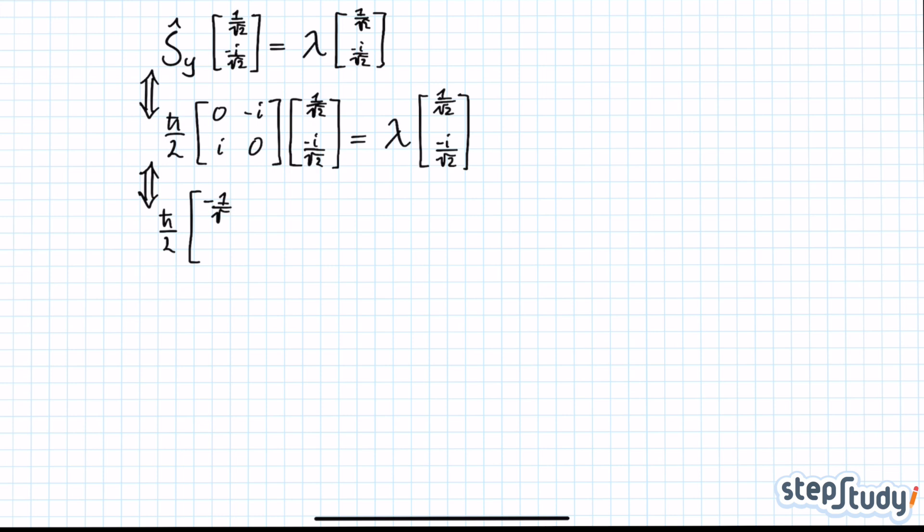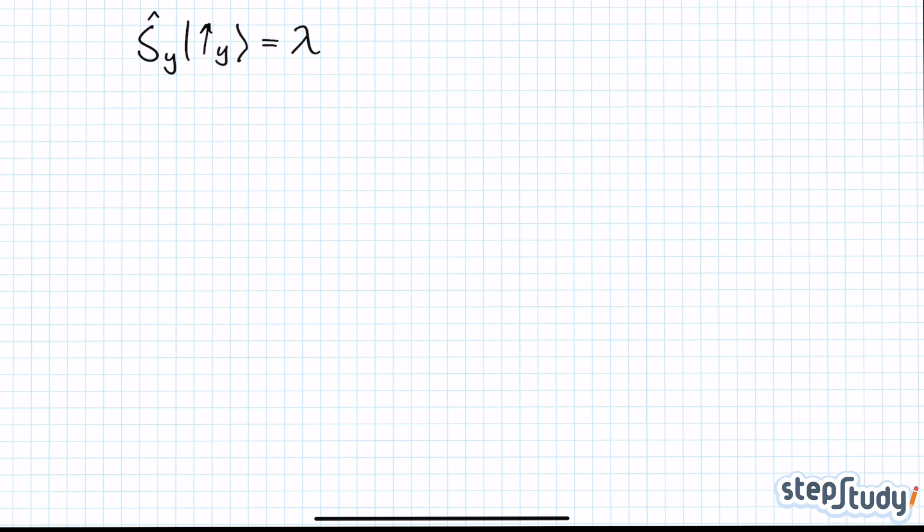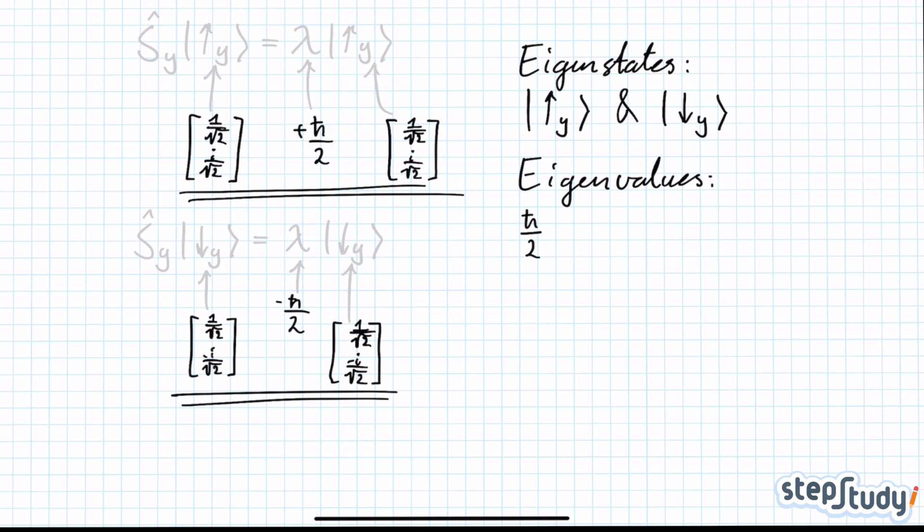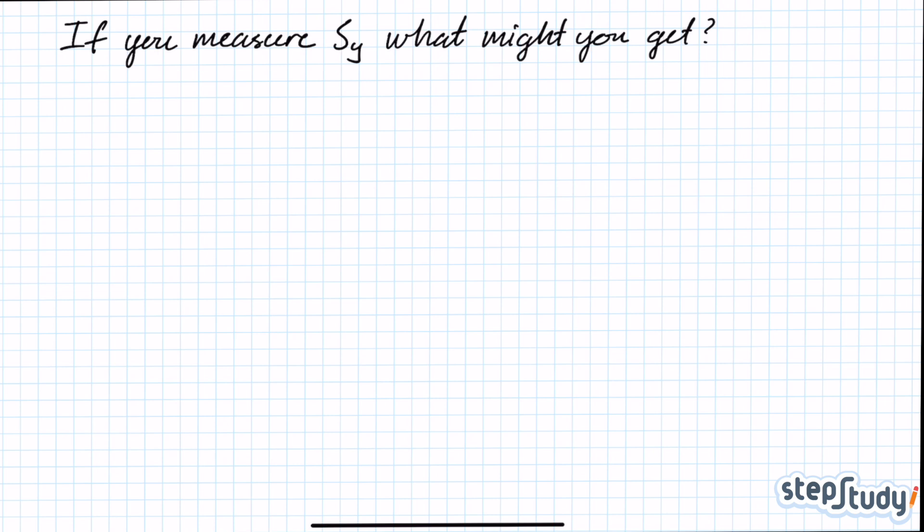So once again, if you measure the spin in the y-direction, which is what it means to use the Sy operator, the only thing that you can get is spin-up and spin-down in the y-direction. The eigen-values are possibly h-bar over 2 or minus h-bar over 2. Those are the eigen-states and the eigen-values. Now as a bonus, I'll show you how you could have arrived at this result without using the Bloch sphere.